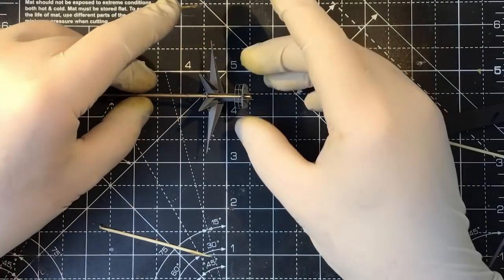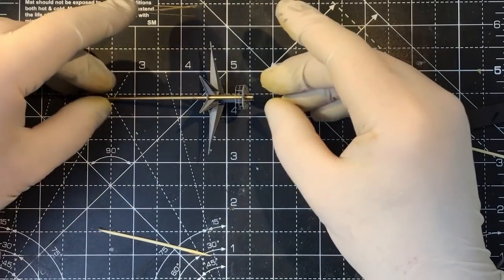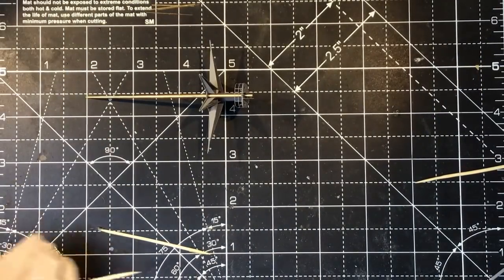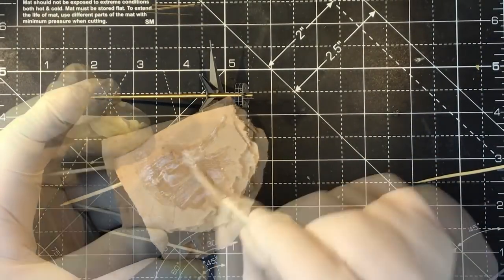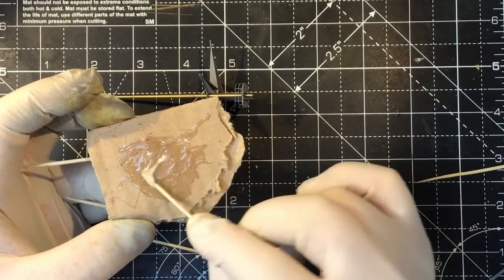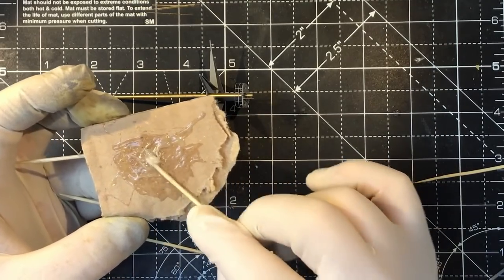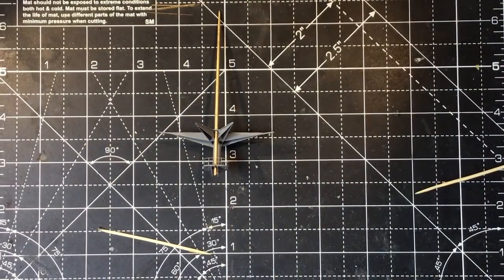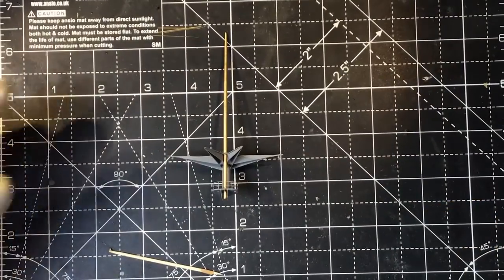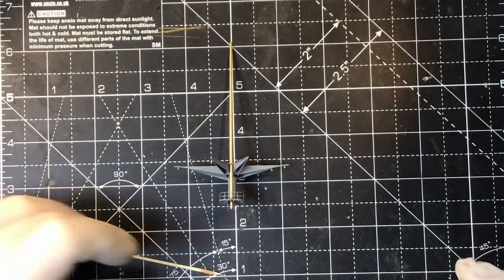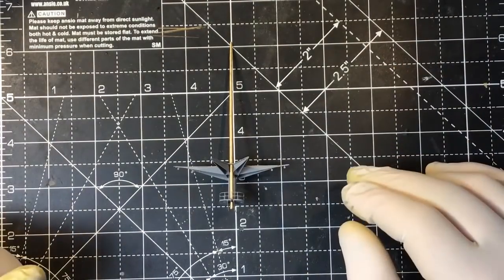I'll just leave that to set up. This is a five minute epoxy, so I usually give it about a quarter of an hour before I try and do anything. I'll just check how it's getting on by keeping an eye on the palette here. I'll just leave that to set.